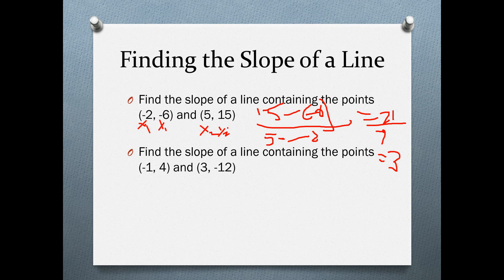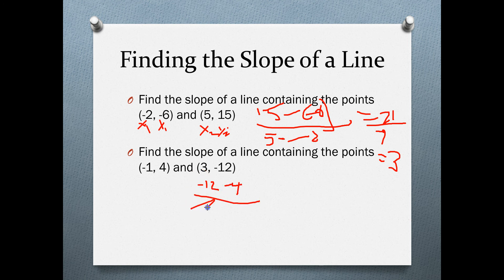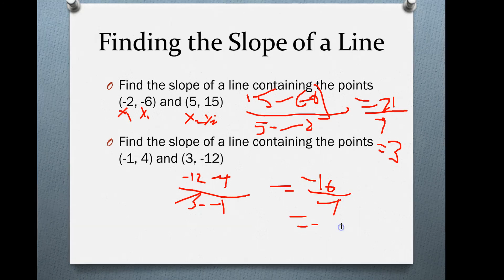We do the same thing for another example. Let's call one point x2 and y2, and the other x1 and y1. To calculate the slope, we subtract y2 minus y1: negative 12 minus 4, over 3 minus negative 1. That gives negative 16 over 4, so the slope of this line is negative 4.